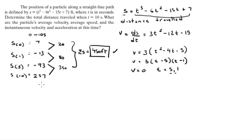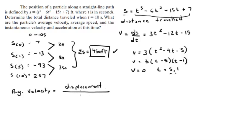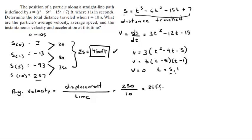The second part asks for the average velocity. Average velocity equals displacement over time. Notice this is displacement, not total distance traveled. Displacement is final minus initial: 257 - 7 = 250 feet. The time elapsed from 0 to 10 seconds is 10 seconds, so average velocity = 25 feet per second.